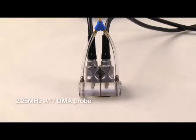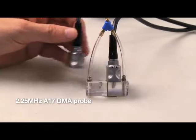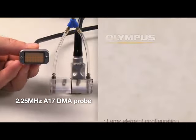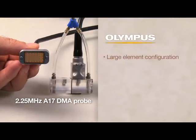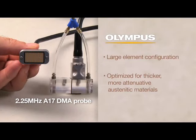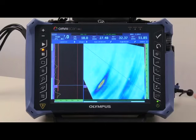The Olympus 2.25 MHz A17 DMA probe contains a 4x7 large element configuration in each housing optimized for thicker and more attenuative austenitic materials.